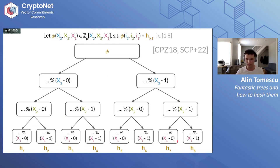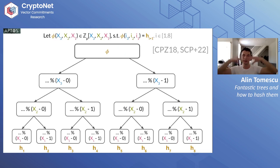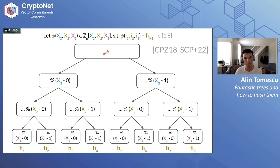So the construction performs divide-and-conquer through repeated divisions, recurses on remainders, and commits to the quotients inside the nodes. A proof consists of the quotient commitments along the path to the leaf you're proving — for h1, the proof is the quotient commitment at each level down the path. Unlike in a Merkle tree where you give sibling paths, here you give quotient commitments. This construction is also homomorphic, like the lattice-based one, and for an unbounded number of updates.